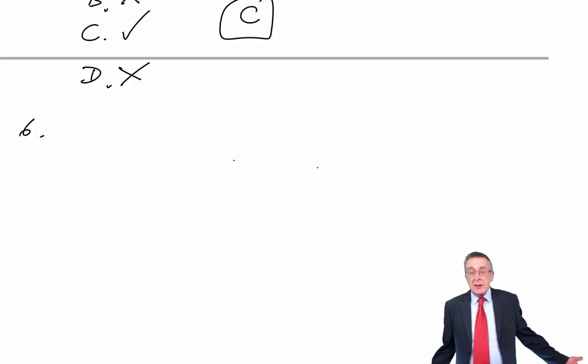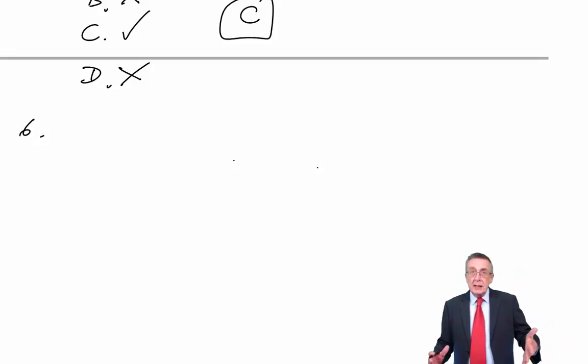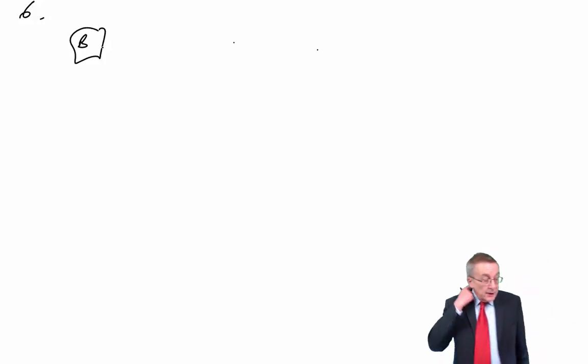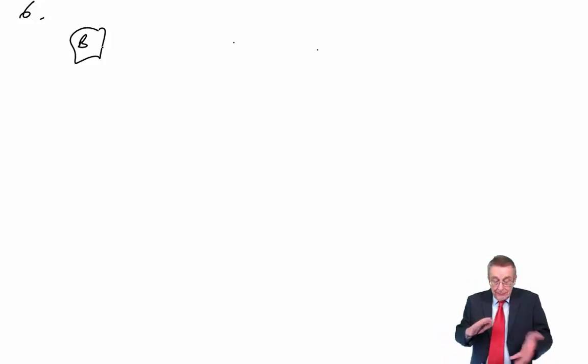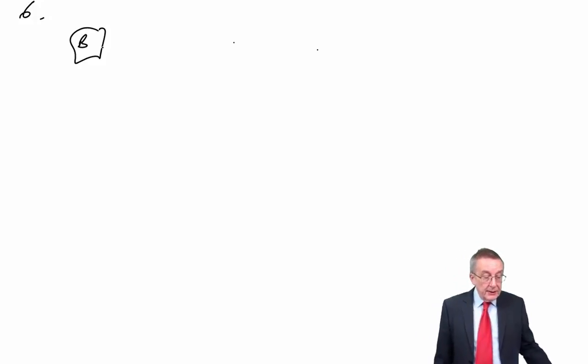I can't give a full lecture on sampling here. You should have watched all the lectures together with the lecture notes. The only sampling method where every member has an equal chance of being in the sample is random sampling — B. The other three are ways that, from a practical point of view, may make sampling easier or quicker, but the only method where they've all got an equal chance is pure random sampling.